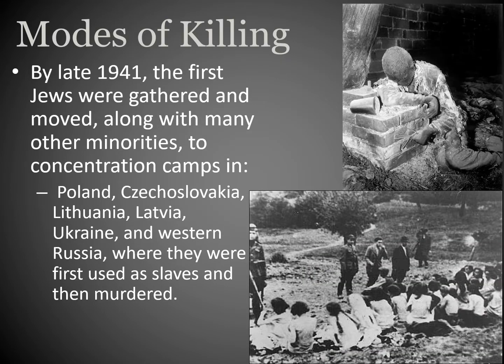By late 1941, the first Jews and many other minorities were gathered and moved to concentration camps from the ghettos. These camps were located throughout Poland mainly, Czechoslovakia, Lithuania, Latvia, Ukraine, and Western Russia. They were first used as slaves for forced labor, and then murdered later if they could not produce enough work or if the population in the camps got too high.